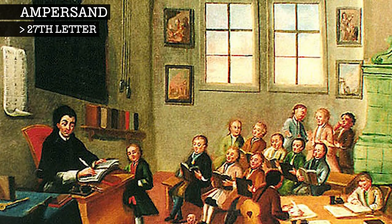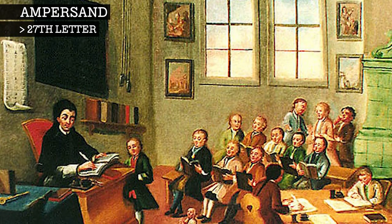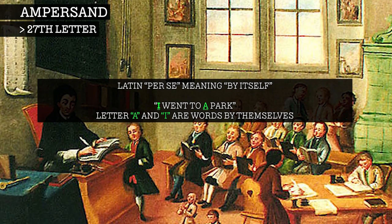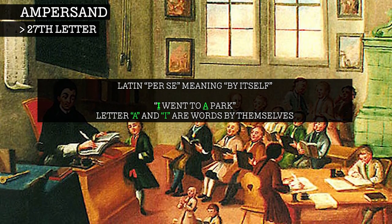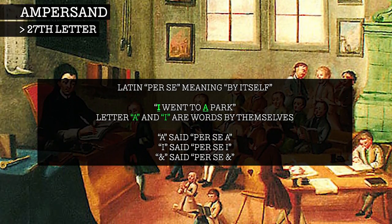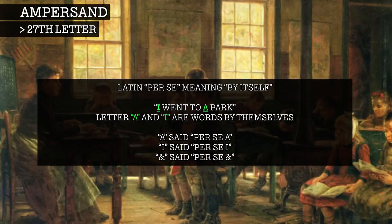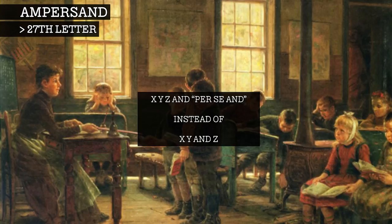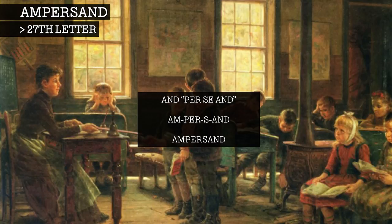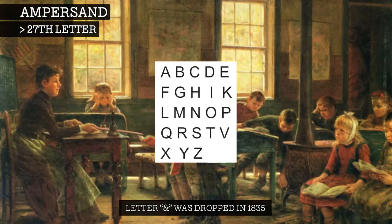In the early 19th century, when school children recited the alphabet, they would use the Latin phrase "per se," which means "by itself," when a letter was also a word by itself. For example, "a" was read out as "per se a," meaning "a by itself." At the same time, ampersand was merely referred to as "and," so children would say "x, y, z and per se and." Over time, "and per se and" blended together to become "ampersand." The letter was dropped in 1835, giving us the 26-letter alphabet we know today.